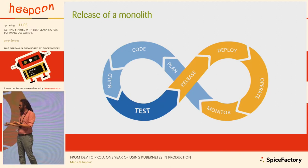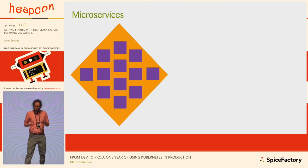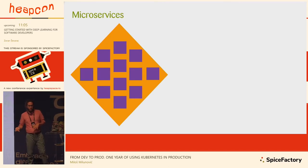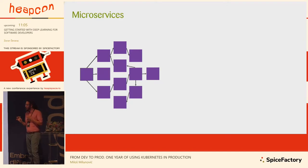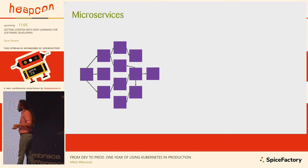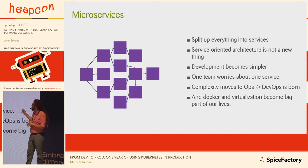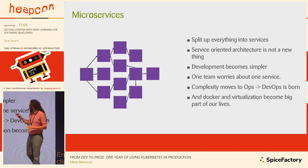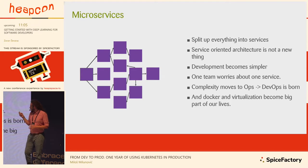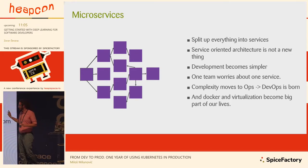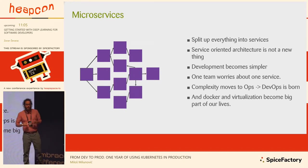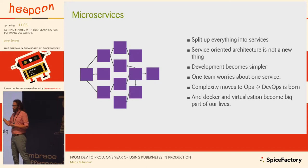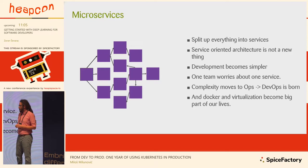People say the solution to everything is microservices — just move to microservices and everything will be easy. But these teams also had some issues. When you talk about microservices, you're splitting everything into services — service-oriented architecture, which has been around for a while. One team worries about one service, which seems fine, but the complexity moves to operations. What happens with cascading failures? What happens with networking? And if you're in an environment where one team develops the application and another team develops the platform where it's hosted, you get into a whole lot of issues.